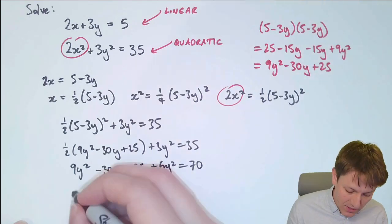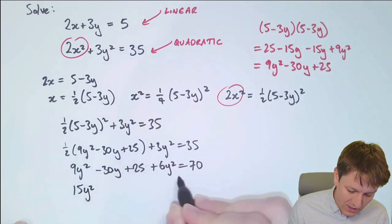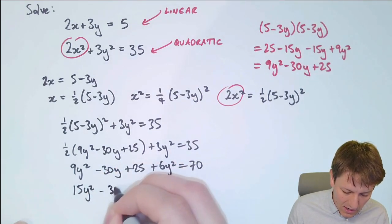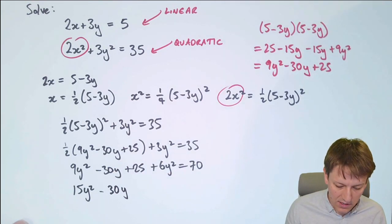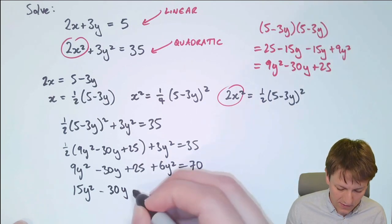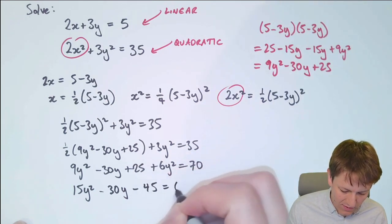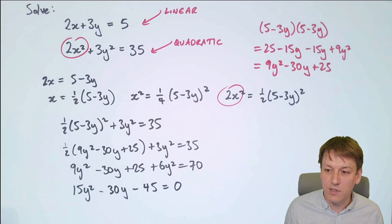Then collecting together the terms, we've got 9y squared and 6y squared gives 15y squared, I've got a minus 30y, and if I subtract the 70 from both sides of the equation, 70 minus 25 is 45, so that gives me minus 45, and that's all equal to 0.